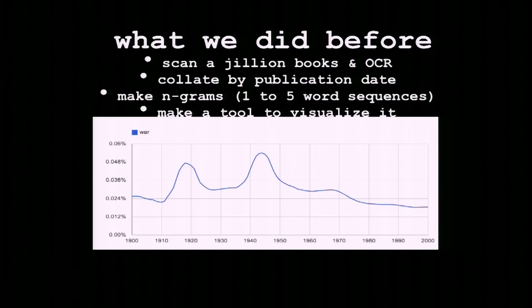So this is the word 'war' going from 1900 to 2000, over the span of the 20th century. Perhaps unsurprisingly, we use the word 'war' a lot more when we are in the middle of a war. You can even see a little hump in the late 60s and early 70s. You might use this to understand things that have happened in history, or even anticipate certain kinds of changes.